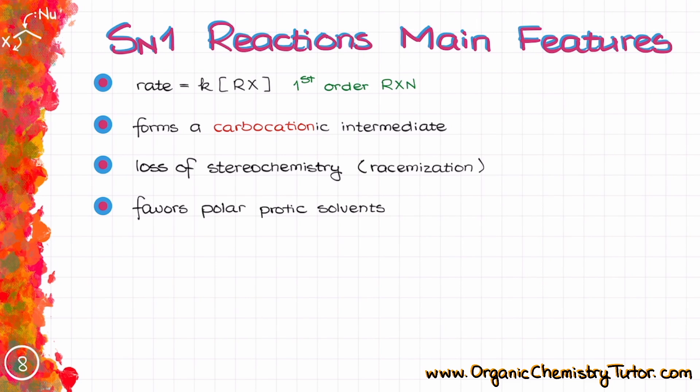So this, however, is not all that we need to know about the SN1 reactions. As I've mentioned a moment ago, because we form carbocation as our intermediates, we can have various carbocationic rearrangements, such as hydride and alkyl shifts in our reactions.